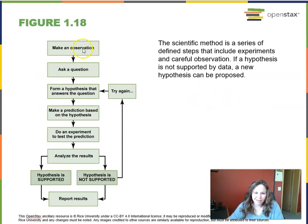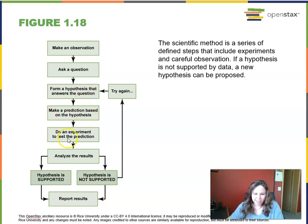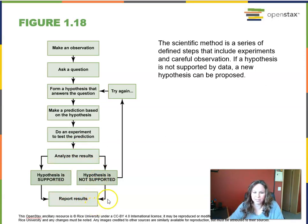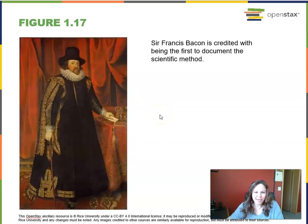The steps of the scientific method are: make an observation, ask a question, form a hypothesis or prediction using deductive reasoning and if-then statements, do an experiment and collect data — which may be qualitative or quantitative — then analyze your results. You may support your hypothesis or falsify it, and then report your results and keep trying. Sir Francis Bacon is credited with being the first to document this process.